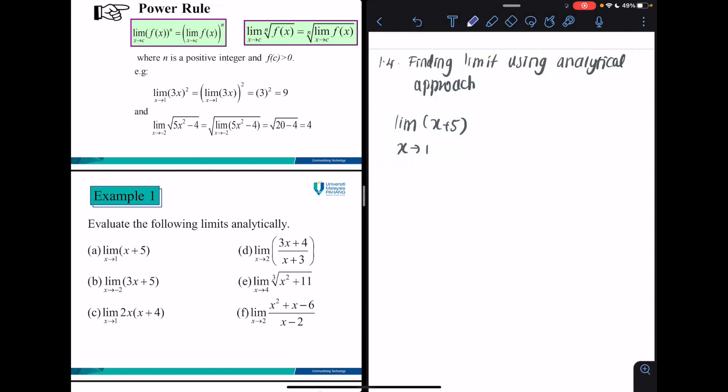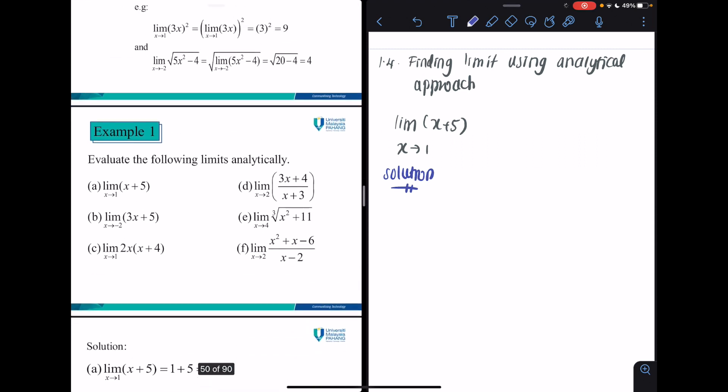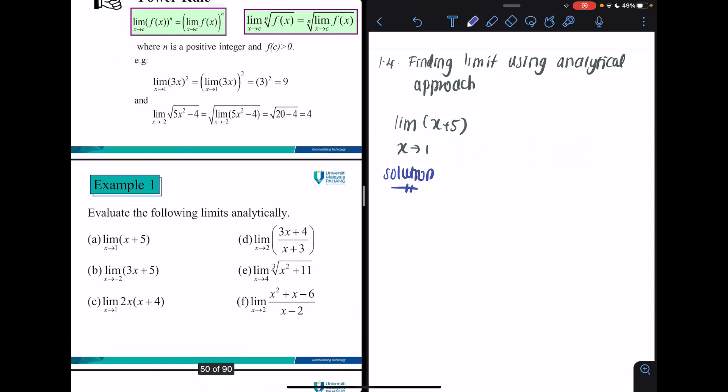We reach this solution for the first question, such that you can simply substitute the value. You will get the limit of x plus 5 when x is approaching 1 as simple as 1 plus 5, which is 6.